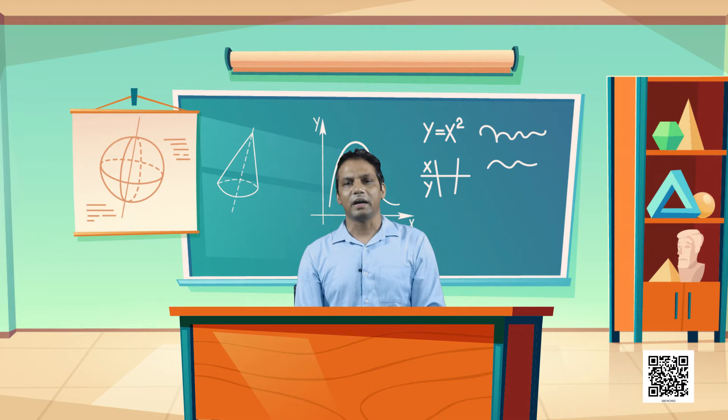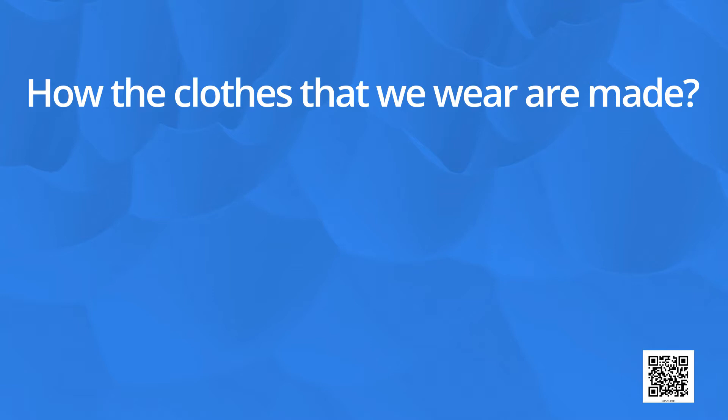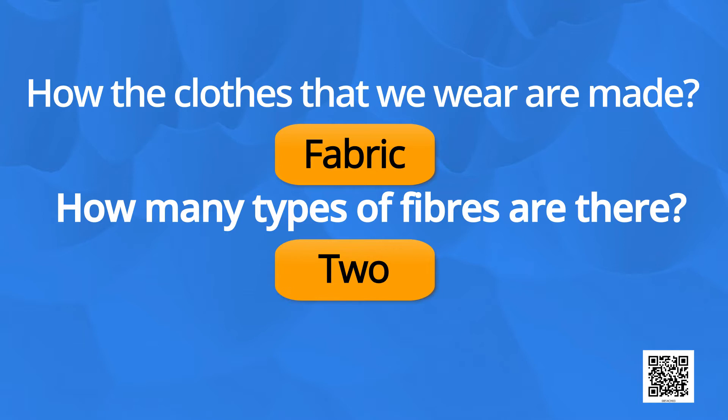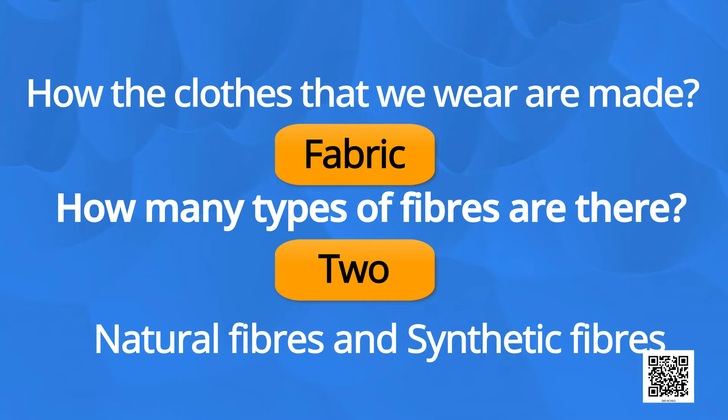Before starting the chapter, let me ask you a few questions. Question number 1: Can you tell me how the clothes that we wear are made? The clothes that we wear are made from fabric, and fabric is made up of fibers. There are two types of fibers: natural fibers and artificial or synthetic fibers.